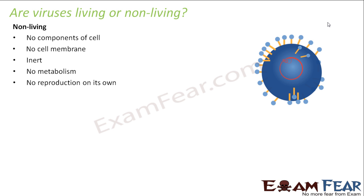Viruses have no reproduction on their own. But then the question is: when they do not have any trace of metabolism and do not reproduce, how is it that when they enter inside our body they can cause infection? Whenever viral infection increases, the count of viruses also increases. So if they cannot reproduce, how is their number increasing?